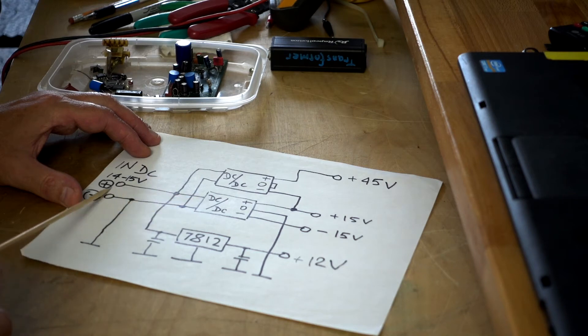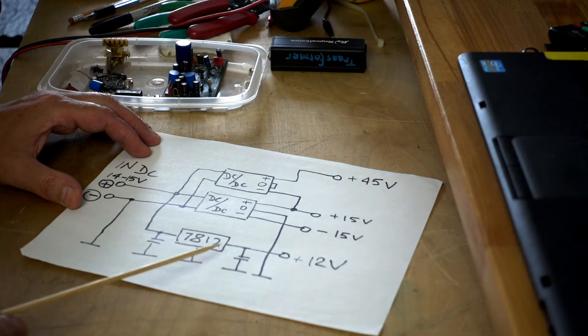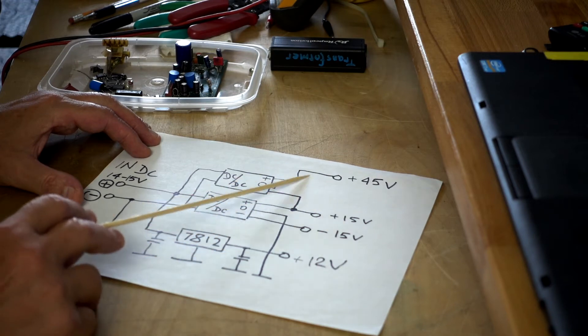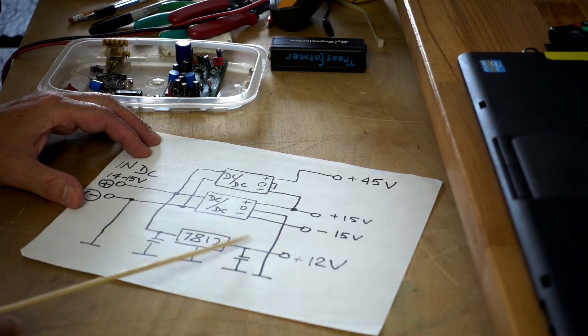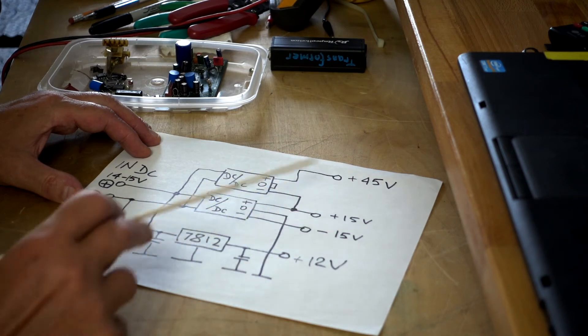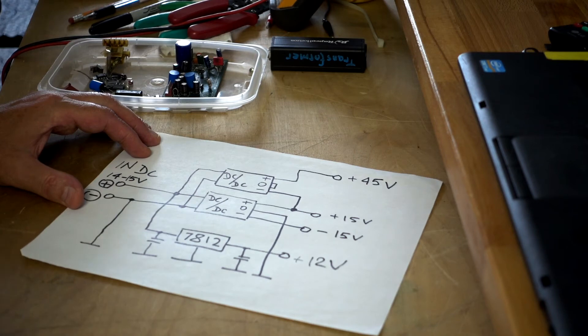And for this unit we need at least 14 volts DC to make sure that 7812 works perfectly with 12 volt regulation. So this is it, the additional filtering capacitor is not shown here but basically that's what we need and we have 1, 2, 3, 4 voltages for powering our unit.